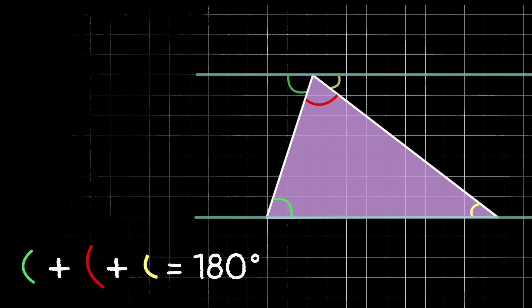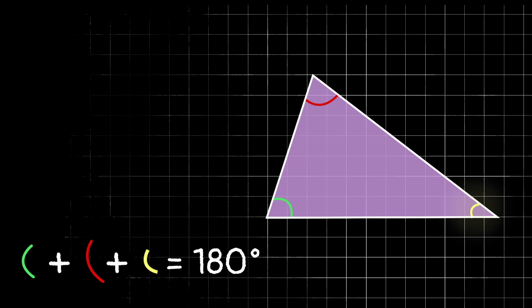So what are the three angles inside of our triangle? Well, we have a green angle, a red angle, and a yellow angle.